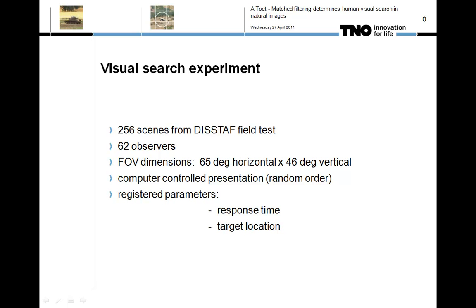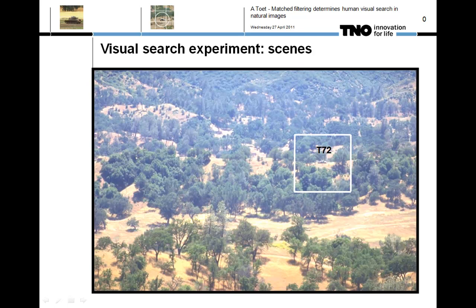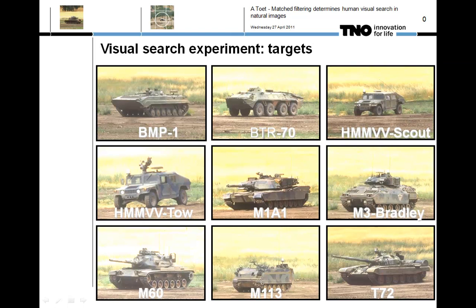This dataset contains the results of a visual search and detection experiment in which 62 observers searched 256 rural scenes for different military vehicles. The scenes were registered during the DISTAFF field trials in Fort Hunter Liggett, California, and were projected in random order with a field of view of 65 degrees horizontal by 46 degrees vertical. The performance parameters registered were response time and correctness. Here you see a typical example of a search scene showing a 272 located on the hilltop, and an overview of the different target vehicles used in the experiment.